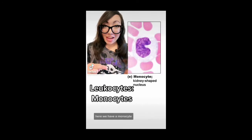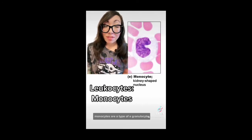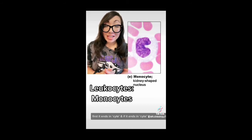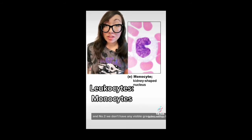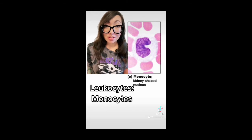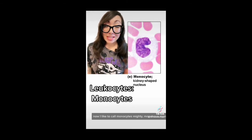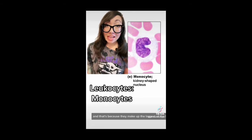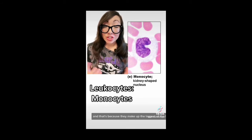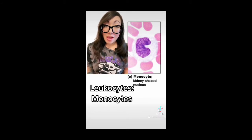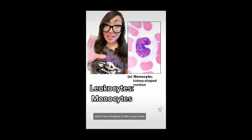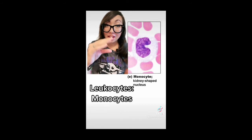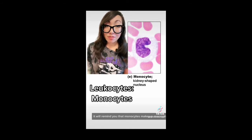Here we have a monocyte. Monocytes are a type of agranulocyte. How do we know? First, it ends in 'cyte,' meaning it is an agranulocyte. And number two, we don't have any visible granules within the cytoplasm. I like to call monocytes 'mighty, monstrous monocytes' because they make up the largest of the leukocytes. That nucleus is also your telltale sign — it looks like a kidney bean. And if you imagine it like a Pac-Man, it will remind you that monocytes make up macrophages.